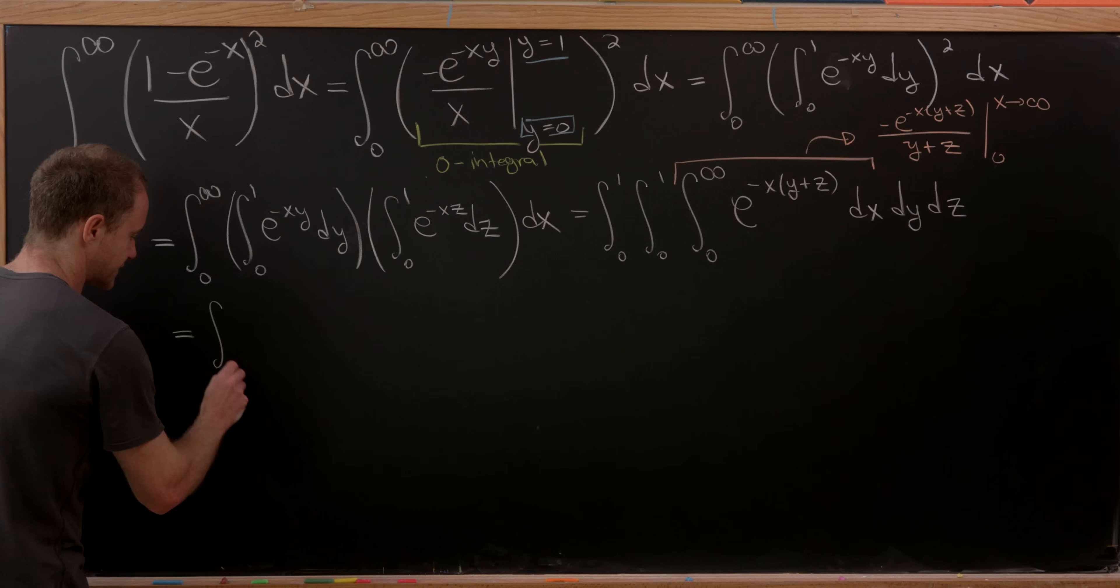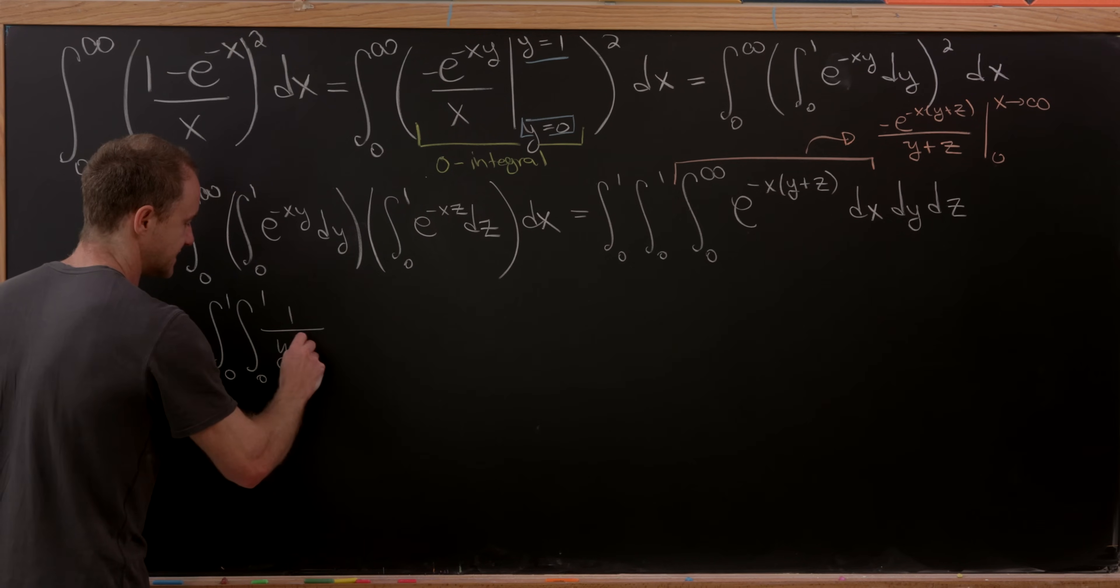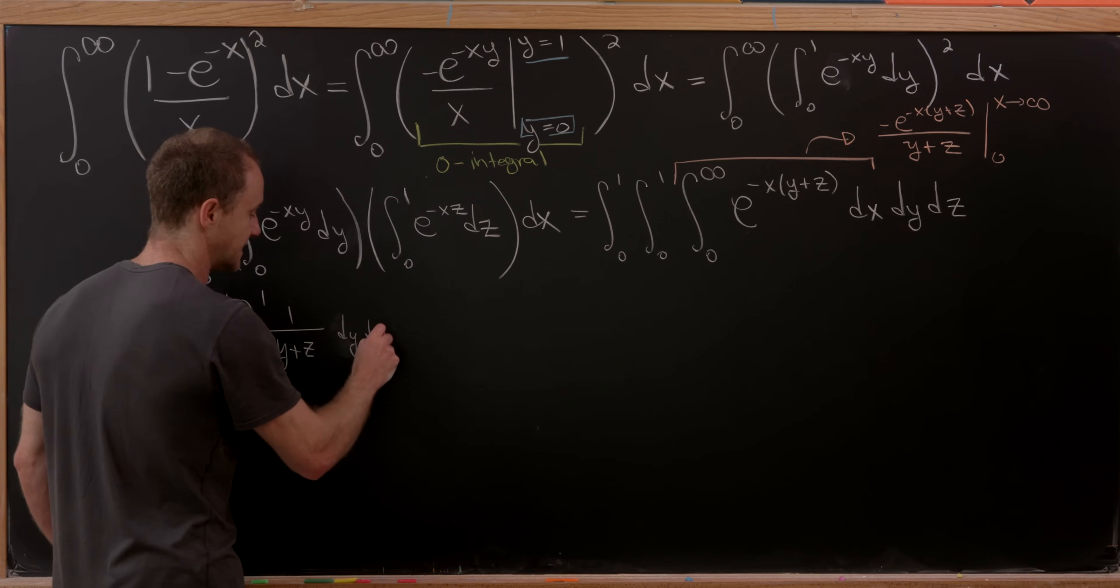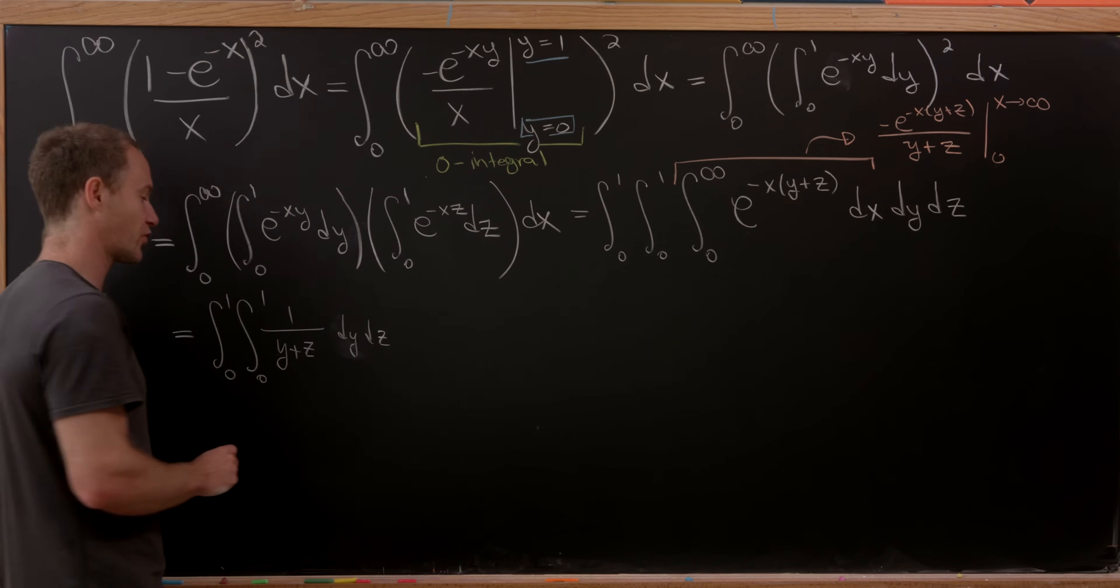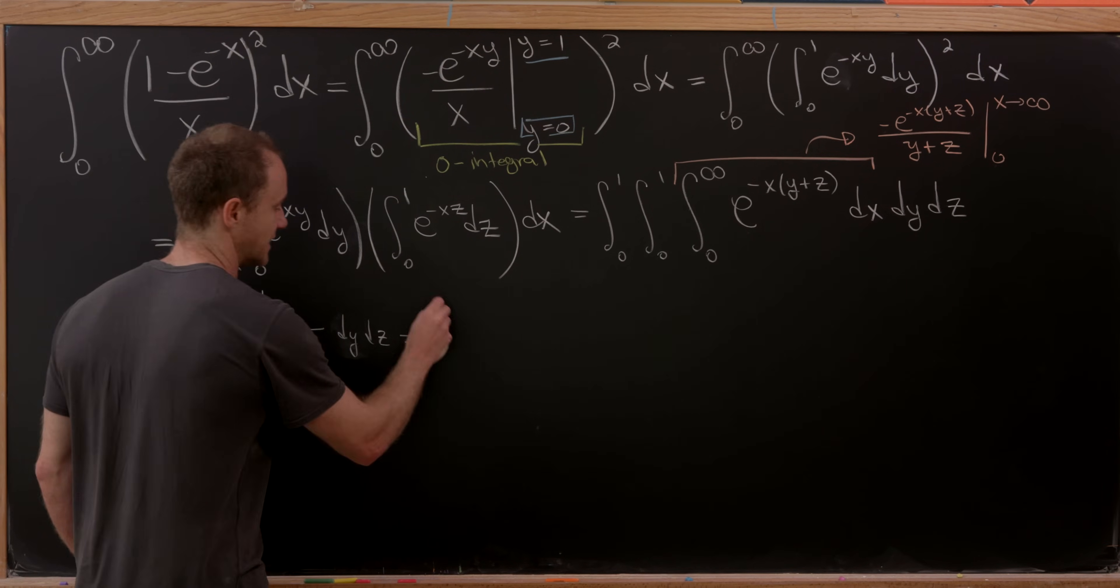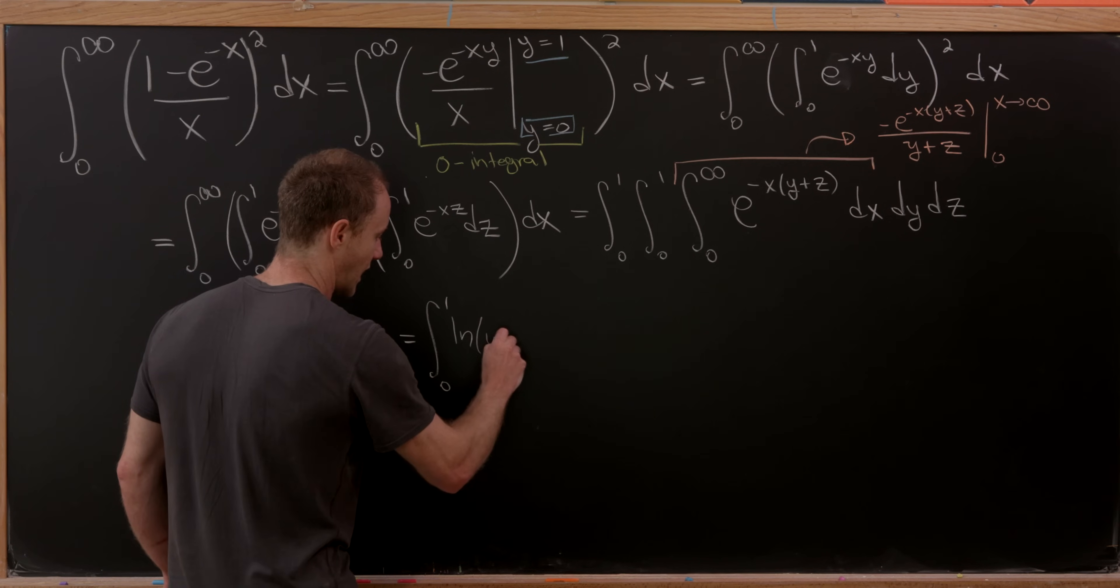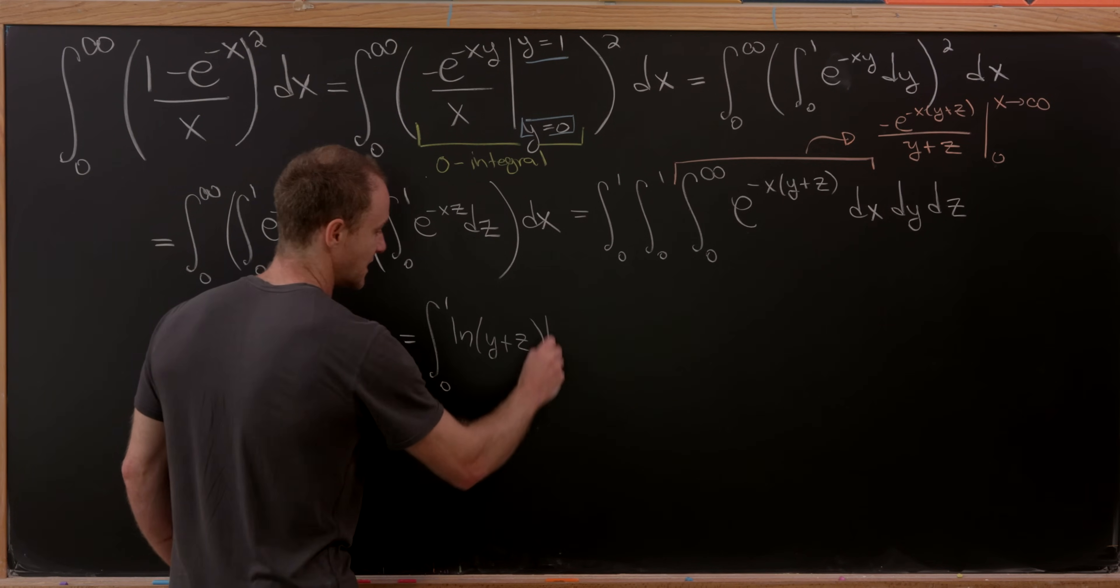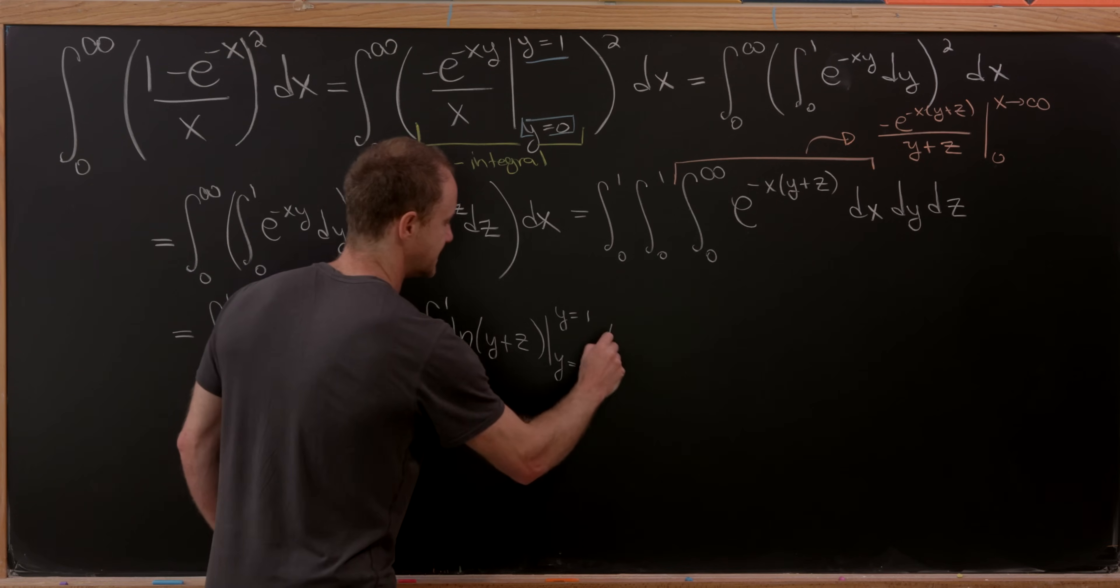So now we have the integral from 0 to 1, the integral from 0 to 1 of 1/(y+z) dy dz. And then from here, we can apply the fundamental theorem of calculus again. This has a pretty simple anti-derivative. So we'll have the integral from 0 to 1, and then we'll have the natural log of y+z, evaluated from y equals 0 to y equals 1, dz.